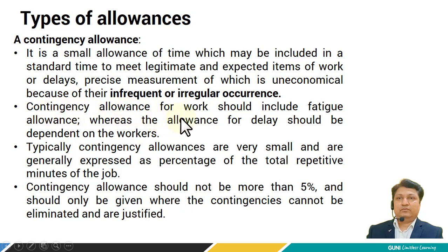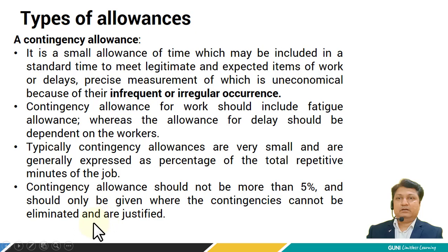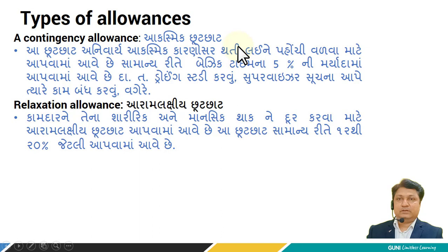Contingency allowance for work should include fatigue allowance, whereas the allowance for delay should also be dependent on the workers. Typically, contingency allowances are very small and are generally expressed as a percentage of the total repetitive minutes of the job. Contingency allowance should not be more than 5% and should be given where the contingency cannot be eliminated and is justified.